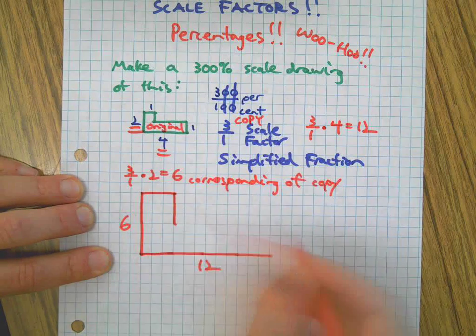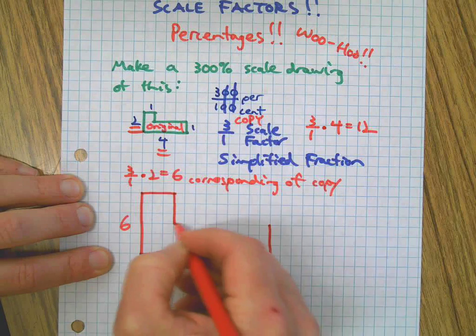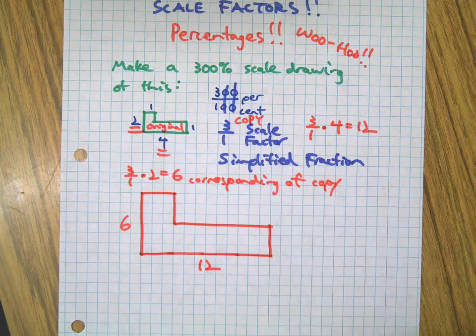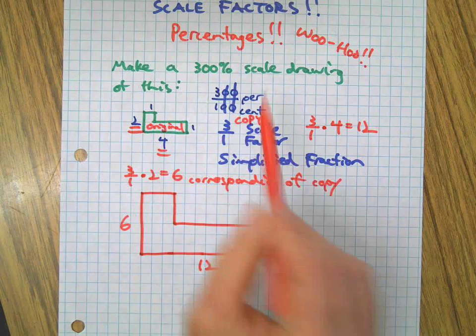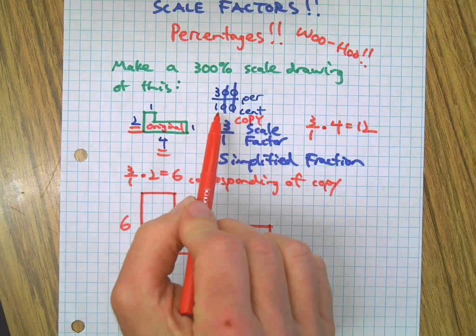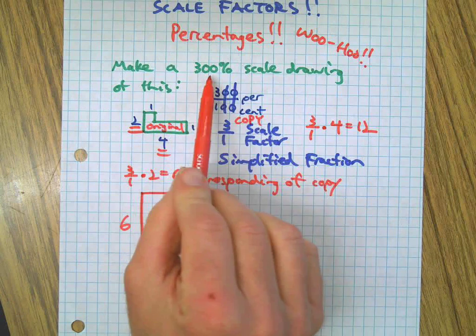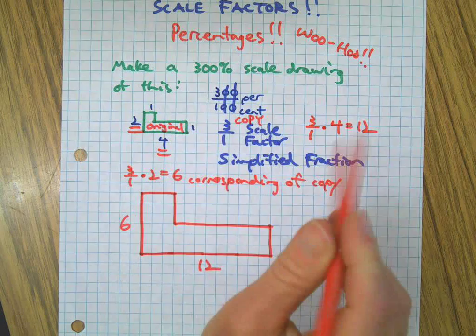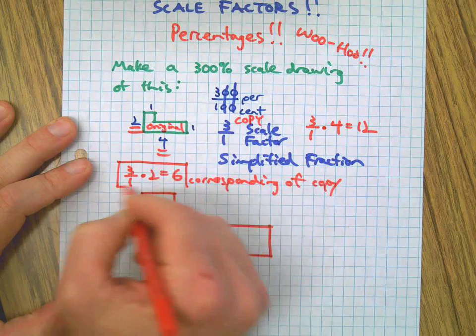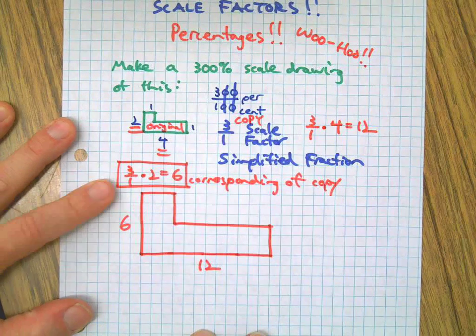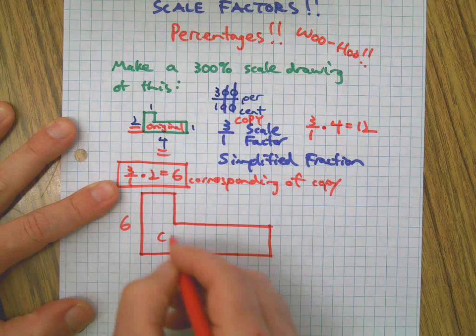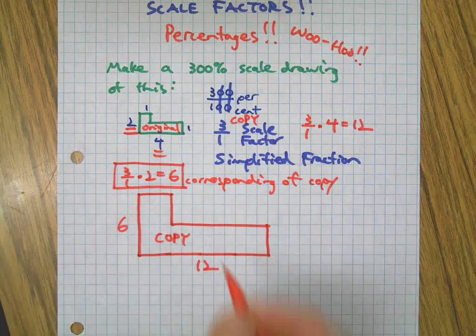And so on. But the thing to learn here in a simple way is: if you're given a percentage, change it to a fraction. This number goes over 100, simplify that fraction, that's your scale factor. Then we go back to our original learning idea from the last video, which is multiply the scale factor times any dimension of the original to get the corresponding dimension of the copy.